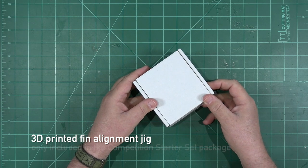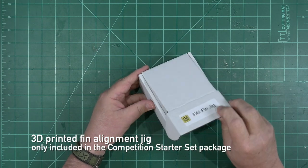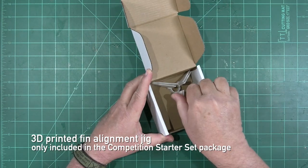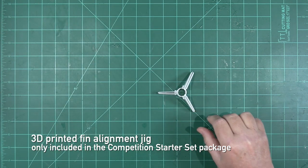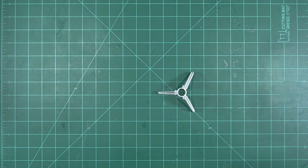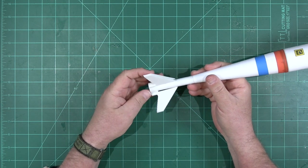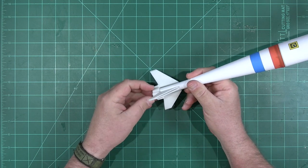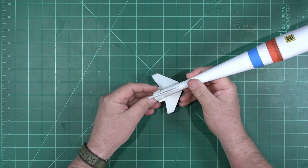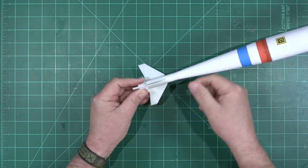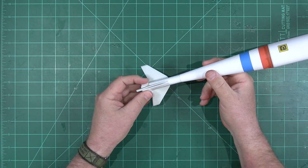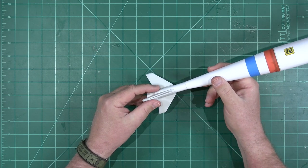Also contained inside the competition starter set is a fin jig. This is a really neat tool that Mike has developed to help you align your fins properly. It's simply inserted over the aft end of the motor mount, and then the fins can be inserted into place one at a time and glued into place. It's really a neat idea.